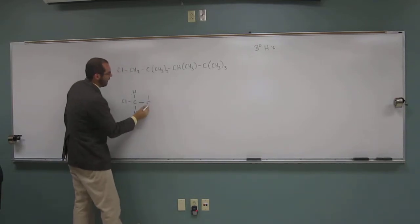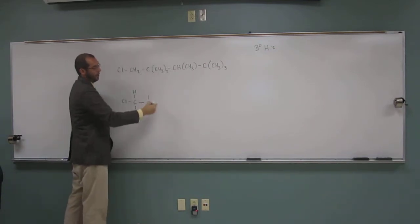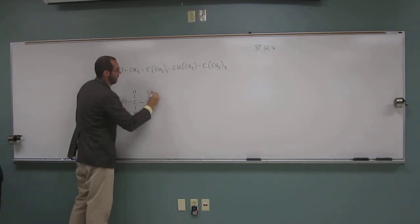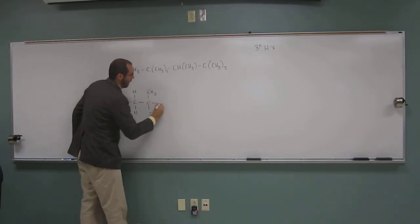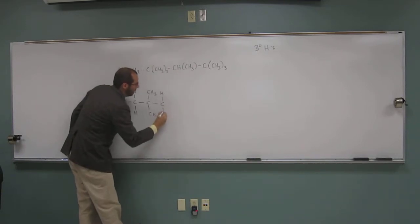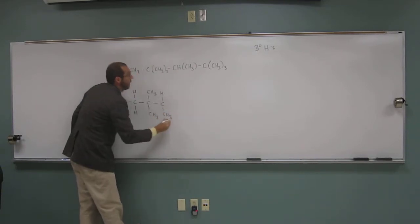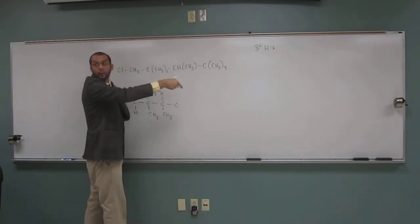So this C here, this C is attached to those two H's, and that's the... Well, this C is attached to two methyl groups, and we've got a C that's attached to an H and a methyl group, and then another carbon that's attached to three methyl groups. Does that make sense?